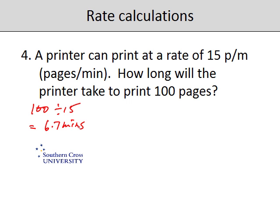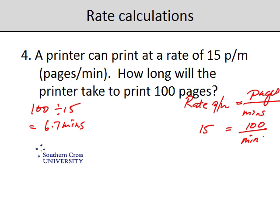Now, like question 2, we can think of this as a rate in pages per minute is equal to the number of pages divided by the number of minutes, which is time. So in other words, 15 pages per minute is equal to - we want to know how long it takes for 100 pages, so that's 100 divided by the number of minutes.